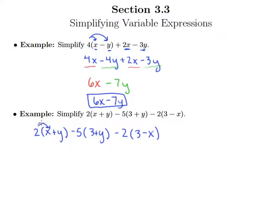We'll distribute our 2 through to x and to y, giving us 2x plus 2y. Now we have minus 5 times (3 plus y). If you've got a minus out here, think of this as negative 5 distributing through — make sure the sign follows through the distribution. So negative 5 times 3 is negative 15, and negative 5 times y is negative 5y.